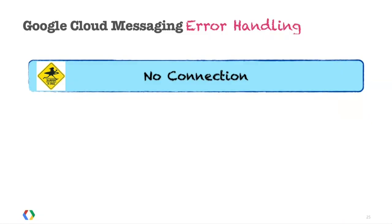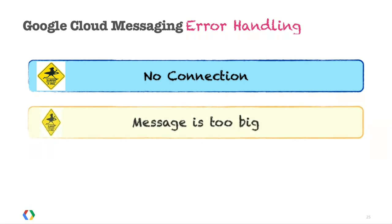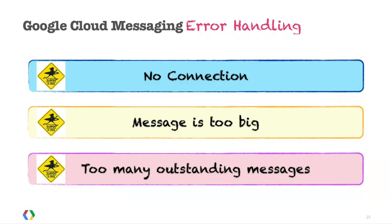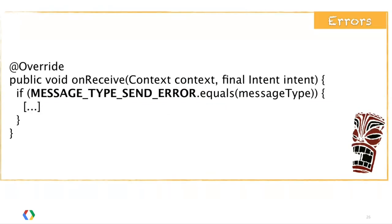If you send a message with time-to-live equals zero but there's no connection, we tell you right away with a 'no connection' error — because we just dropped that message. Messages from upstream abide by the same rules as messages from the cloud: there's a maximum payload of four kilobytes. If you send a five-kilobyte message, we return an error saying the message is too big. Also, we can't keep collecting messages on the device indefinitely — after 20 messages with no network, we reject the 21st saying 'too many pending messages, try later once we flush this queue.' Errors are sent to your broadcast receiver that you already have for receiving messages from the cloud, along with the message identifier and error code.